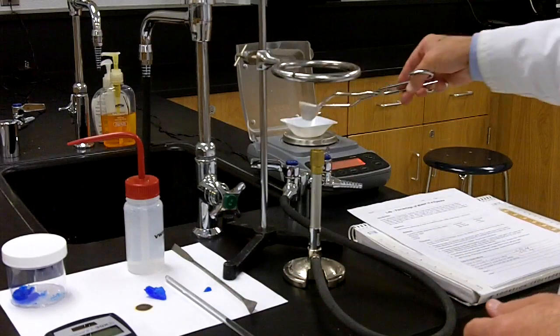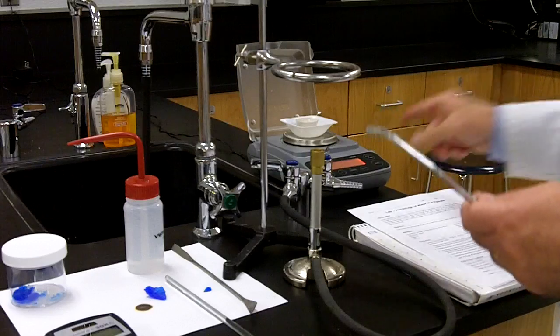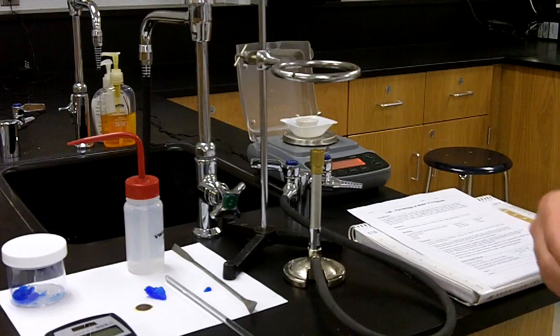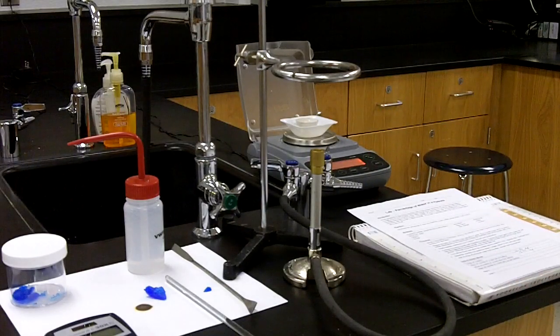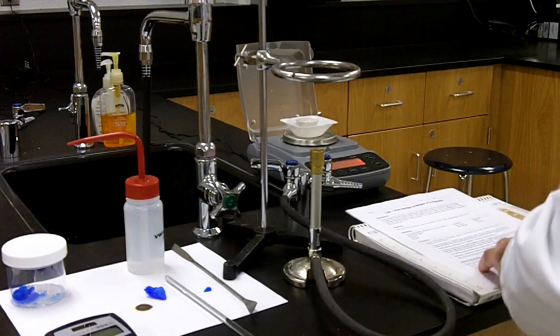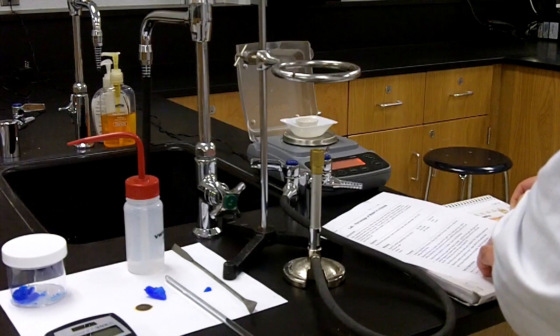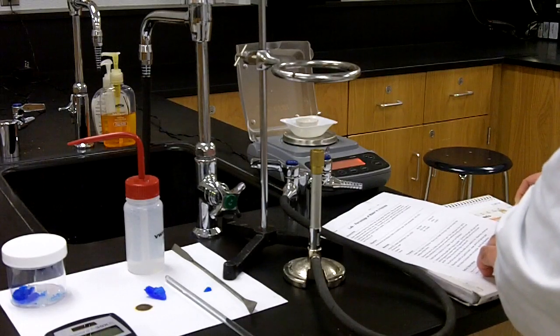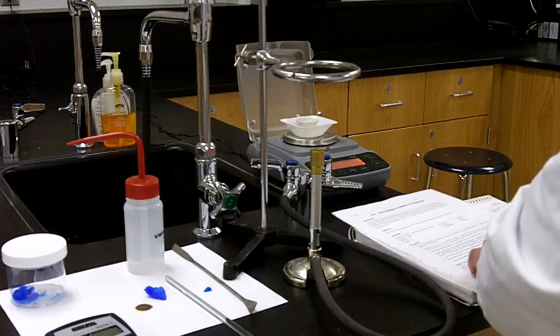Now I'm just going to place it onto the scale. I previously balanced the scale, and the scale, by the way, should be measured up to a one hundredth of a gram. In this case, I get 12.51 grams. So I'll record that 12.51 grams as the mass of my crucible.